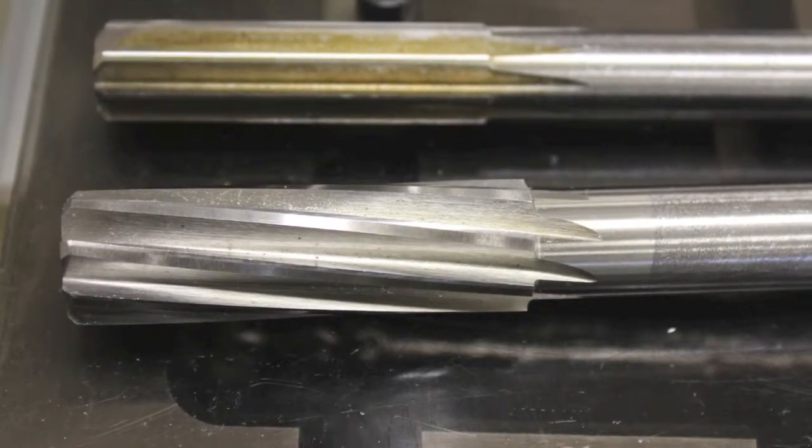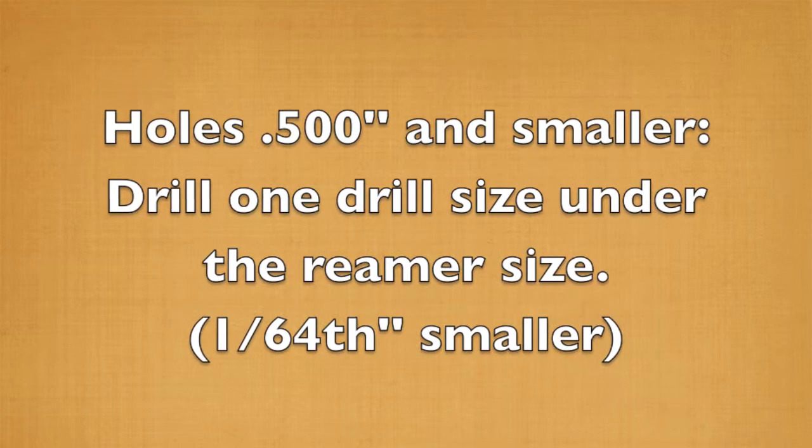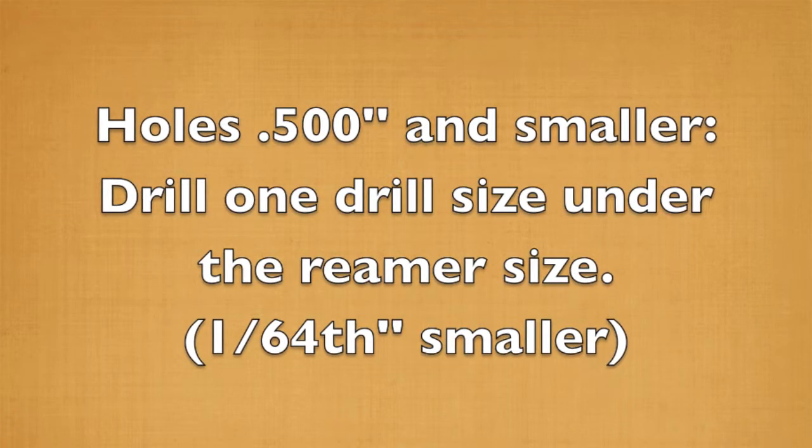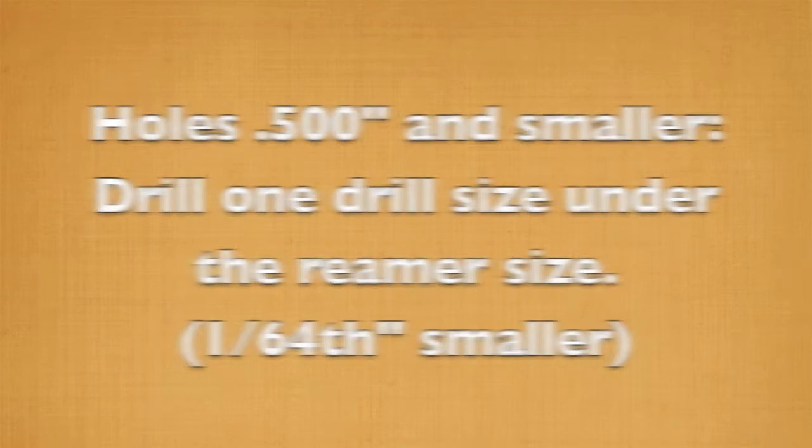For holes half an inch and lower, a hole should be drilled one drill size or one sixty-fourth of an inch smaller than the ream size to allow for material removal.